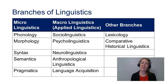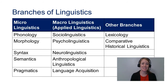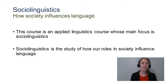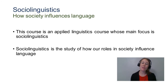While we explore these five core pillars of linguistics, we're going to look at them through the macro lens of sociolinguistics. Sociolinguistics is the study of how our roles in society influence language. In short, it's looking at language through the lens of sociology, through human society and the roles that humans play.